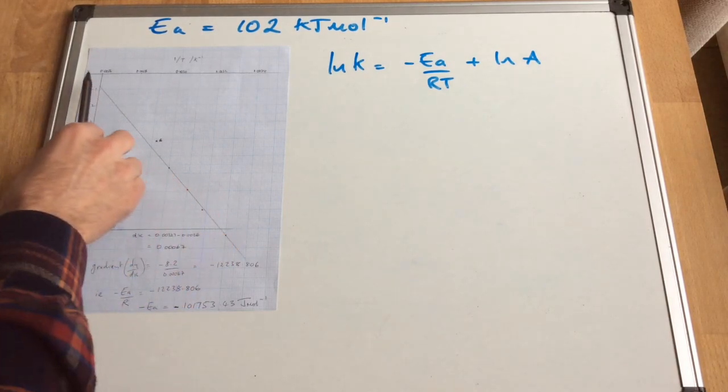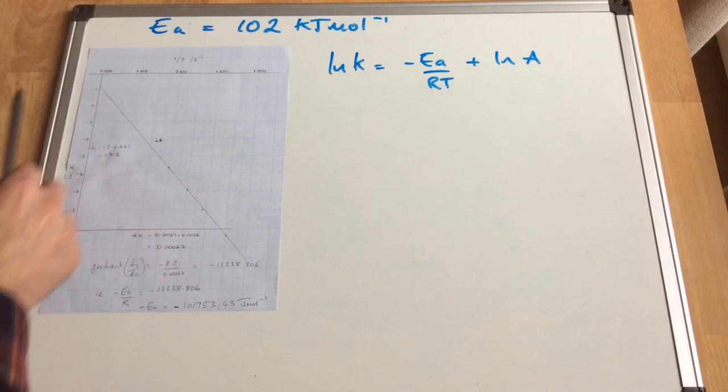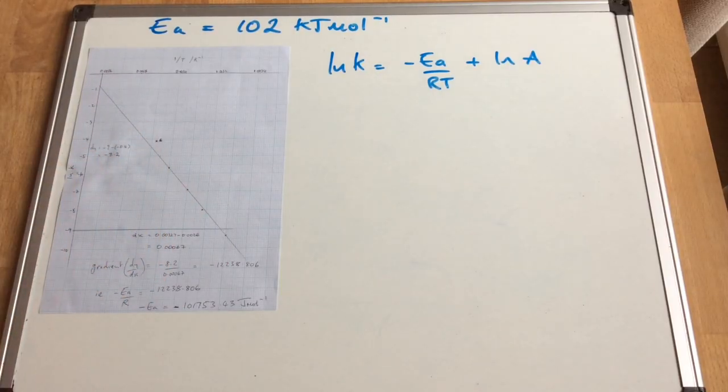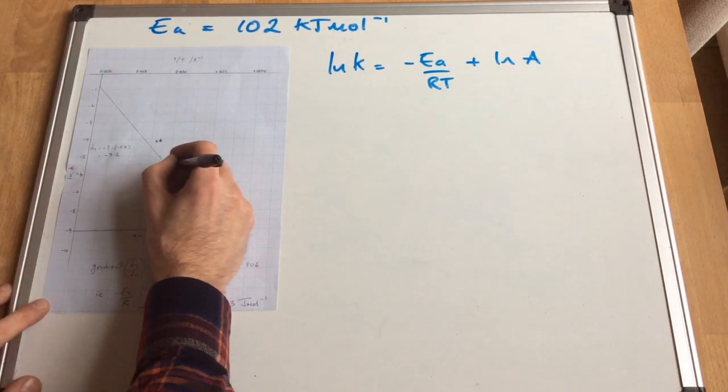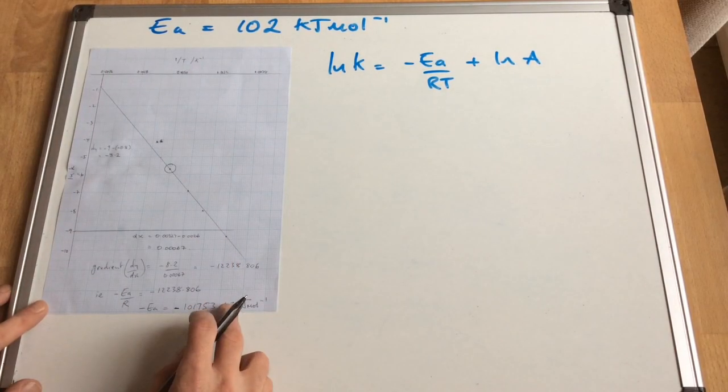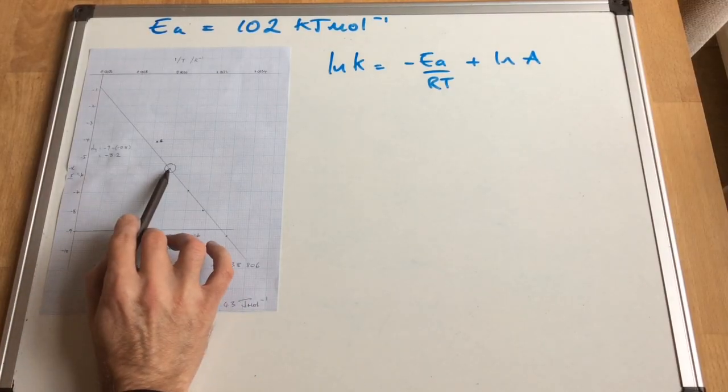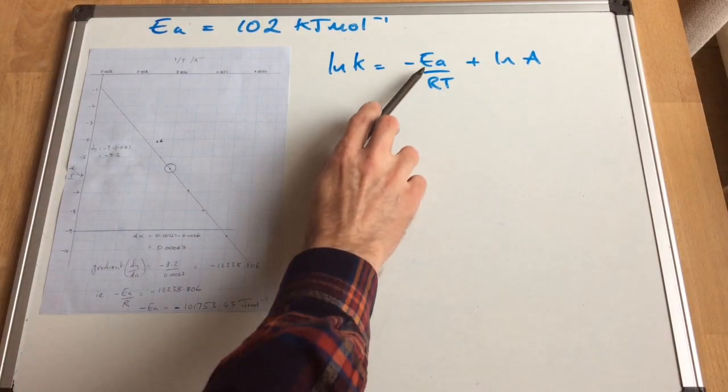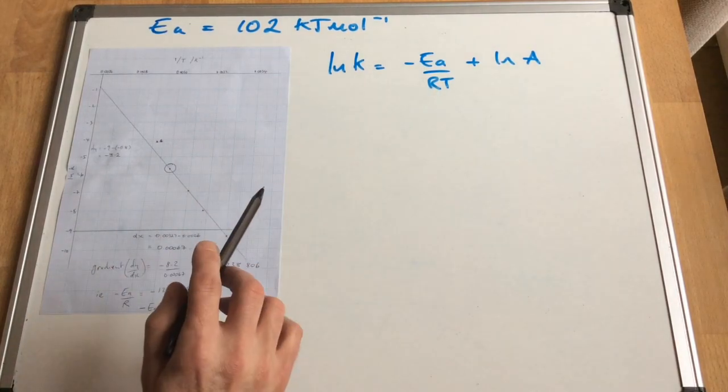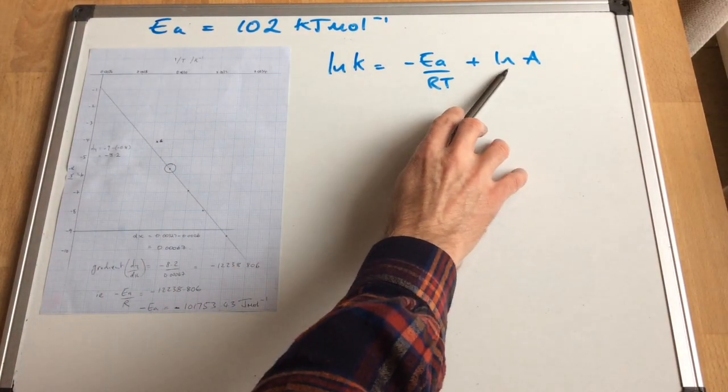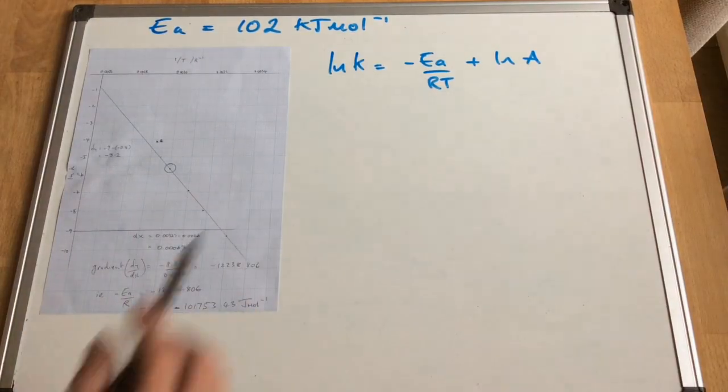Now we can't do a y-intercept using this graph. So what we're going to have to do is choose a point on the graph. So I think I'm going to go for that point there. So I'm going to use the y-value and the x-value at that point. And I've just calculated the activation energy. And so that's going to give me everything else I need in the equation. So I can isolate ln A and then work out a value for A. So we'll do that now.